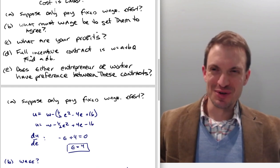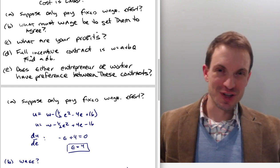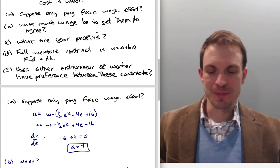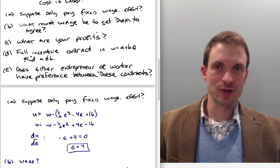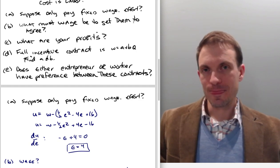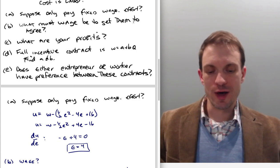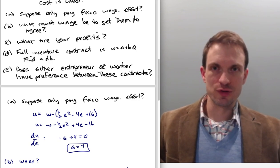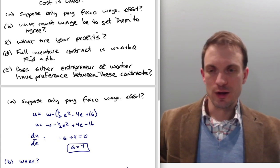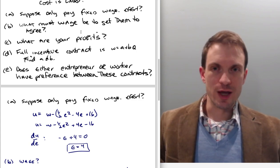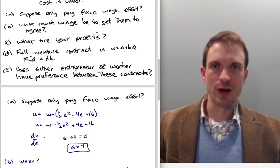So suppose we pay only a fixed wage. What's going to be the effort for our worker? Suppose we pay some flat wage - a lot of jobs do this, a lot of salary jobs, a lot of hourly wages are just going to be completely invariant to the actual output. We're going to assume away the possibility of any type of bonuses or something that could be conditioned on meeting a particular threshold.